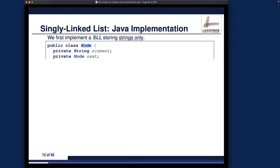Inside the Node class, we refer to the class itself — this is completely acceptable and quite common when implementing a recursive data structure. These are the two attributes to focus on for each node in the list. Remember, each list contains a connected chain of nodes, but this is just one of them.